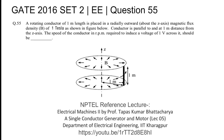2016 Set 2 electrical question number 55: a rotating conductor of 1 meter length is placed in a radially outward magnetic flux density of 1 tesla about the z axis, as shown in the figure. The conductor is rotating, and we need to find the RPM required to induce a voltage of 1 volt.